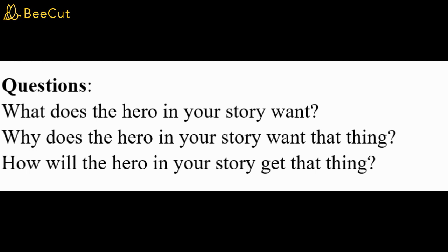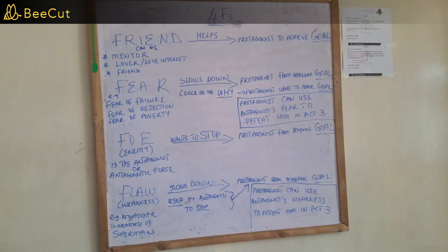The hero in your story should have a friend that will help her get what she wants. The hero in your story may want or need that thing because of her big fear. For example, if your hero is scared of spiders, she may want to get the magical bug spray from a dangerous cave so that spiders will never come near her. The hero in your story also has a flaw or weakness which makes it hard for her to get what she wants.